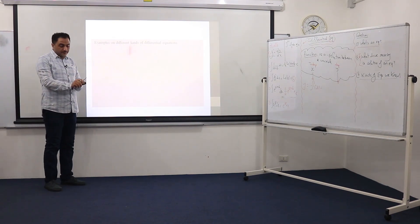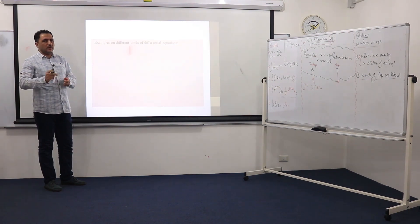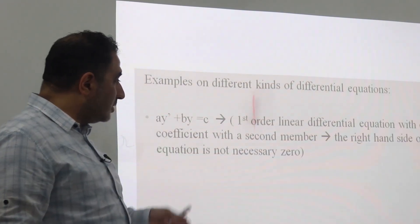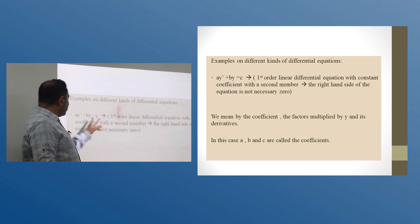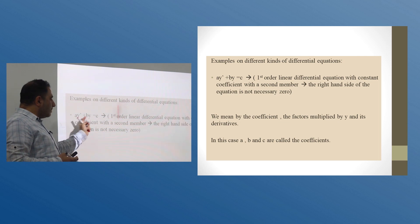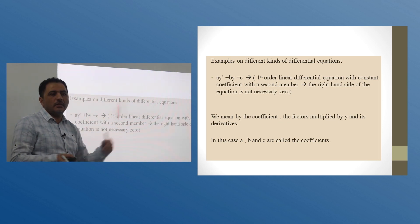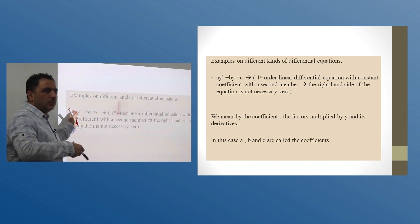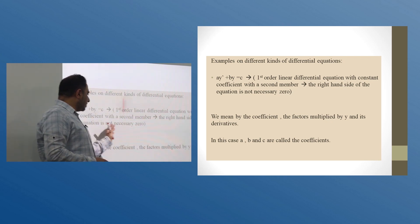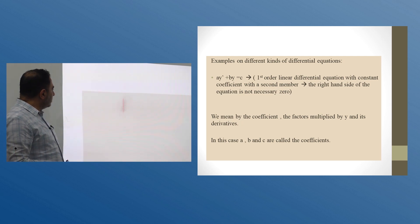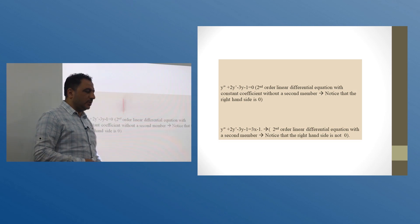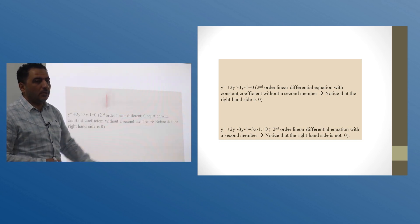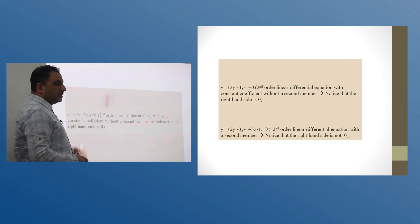Here are examples of different kinds of differential equations. We have a first order linear differential equation with constant coefficients. First order means the derivative is the first one — y prime. Linear means there is no y prime squared, no y squared, no ln y, no sine y. With constant coefficients means a, b, and c are constants. This is one kind we will deal with throughout this chapter. We also have a second order linear differential equation with constant coefficients: y'' + 2y' - 3y = 0. Second order since the highest derivative is 2, and all coefficients are constant.